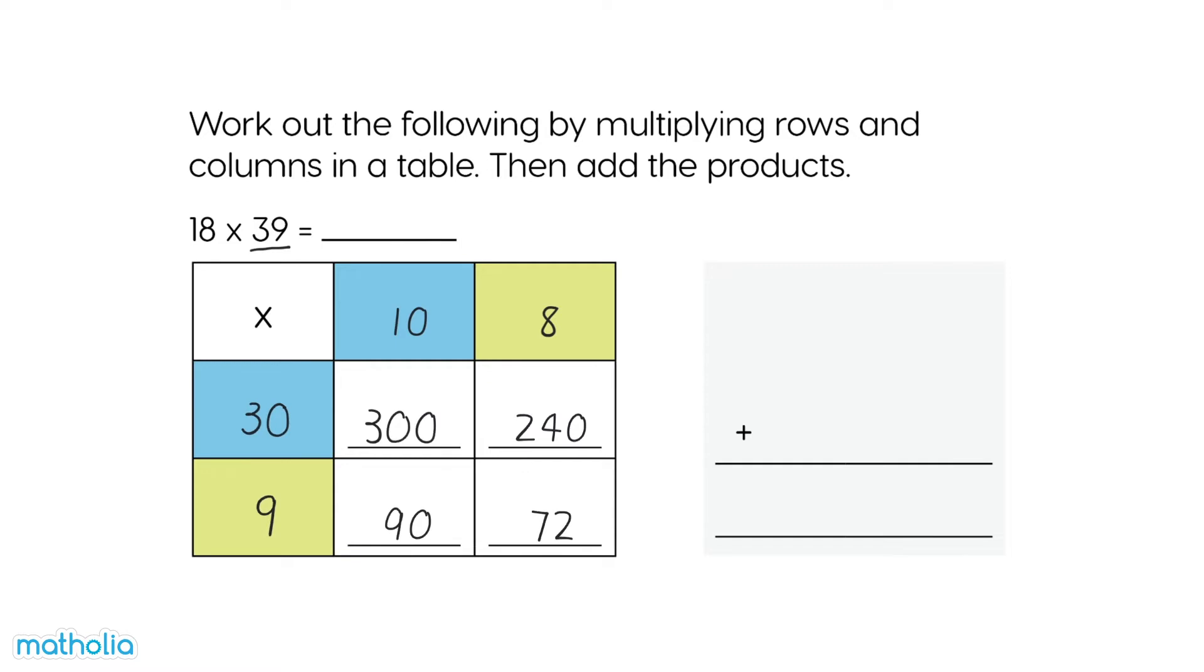Now let's add the products. 300 plus 240 plus 90 plus 72 equals 702. So 18 times 39 equals 702.